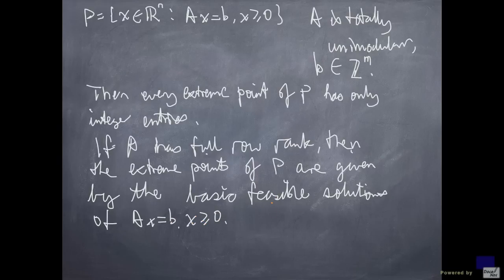Now, suppose A has full row rank. A basic feasible solution x-star is usually given by a basis B, and the entries of the basic variables are given by this.